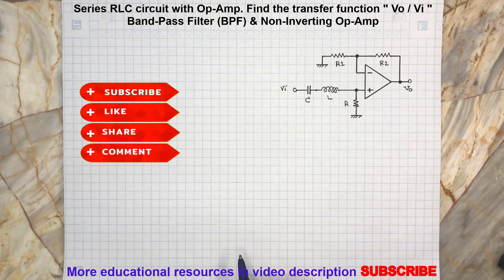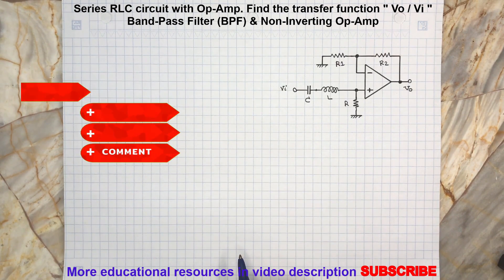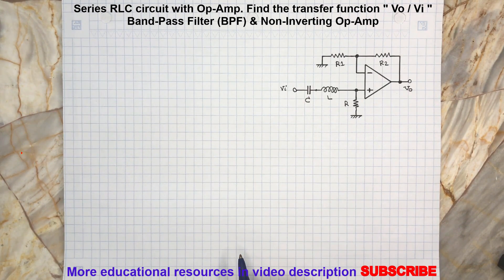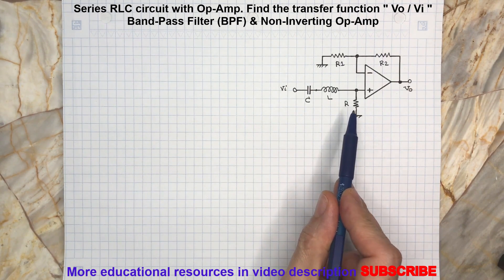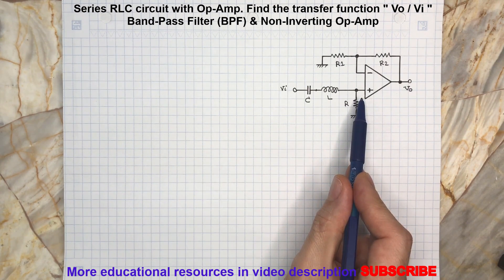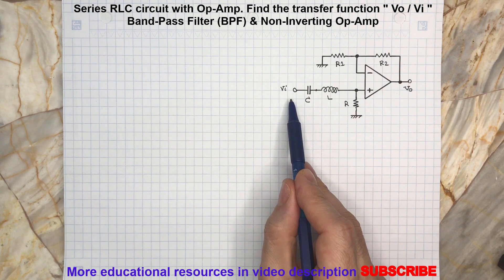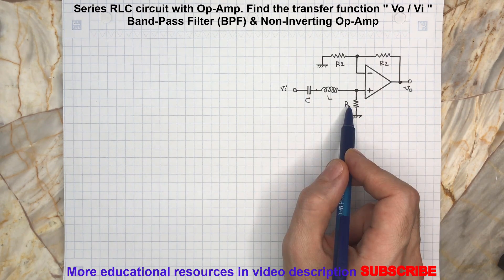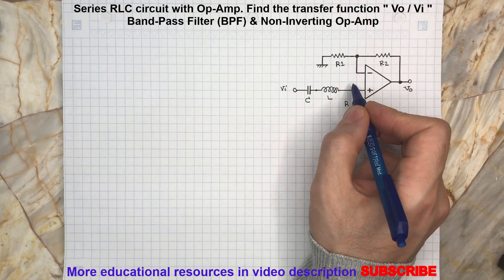Hello and welcome back to another video. Today we are going to review this op-amp circuit. As you may already notice, this is an RLC filter connected to a non-inverting op-amp circuit, and we would like to find the transfer function Vo to Vi. To start, we need to find the voltage at Va.